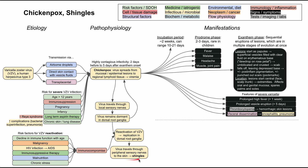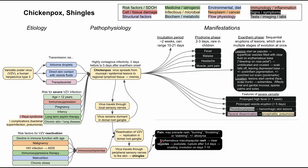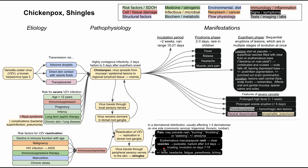Once shingles occurs, it manifests with pain and vesicles on the skin in a dermatomal distribution, usually affecting one to three dermatomes on one side of the body. The most commonly affected dermatomes are in the cervical, trigeminal, thoracic, and lumbar regions. The pain is typically described as burning, throbbing, and stabbing, and may precede the rash. Allodynia is also possible. The rash begins as an erythematous maculopapular rash, develops into clear vesicles, then pustules which rupture after three to four days, crusting over and involuting after seven to ten days. Associated symptoms include fever, headaches, fatigue, paresthesias, and itching.